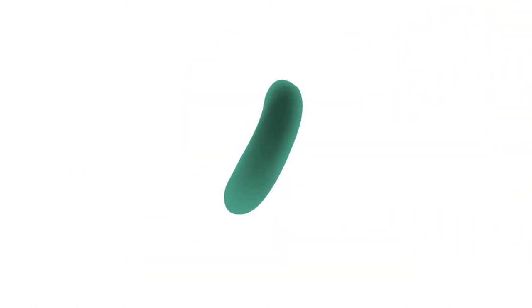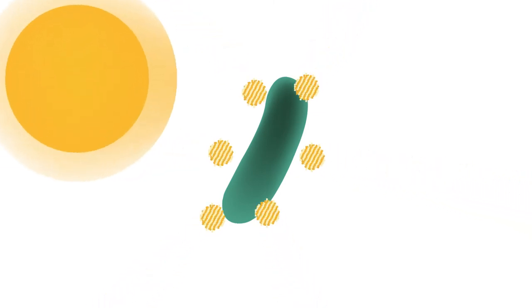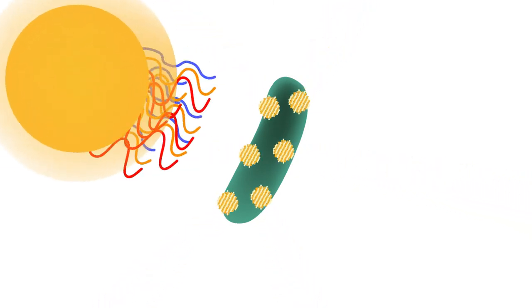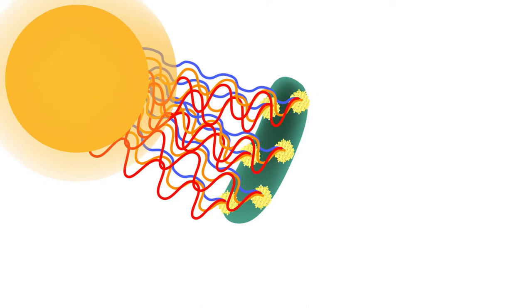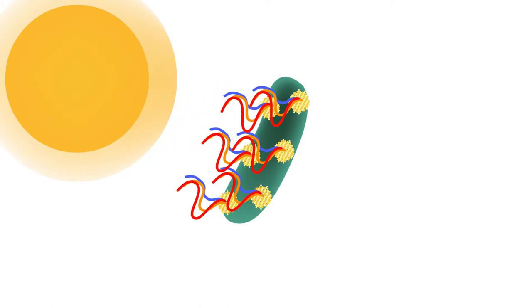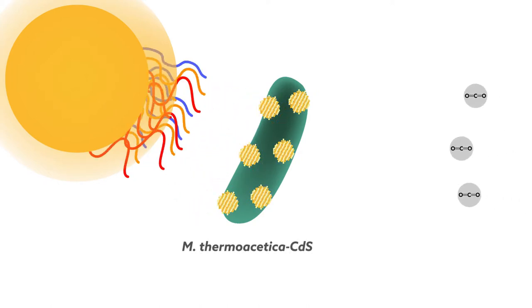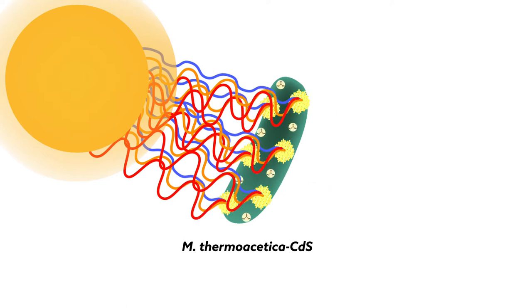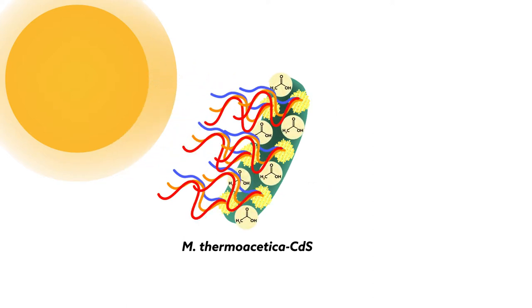When Sakamoto fed cadmium and the amino acid cysteine to the bacteria, they synthesized cadmium sulfide nanoparticles, which function as solar panels, on their surfaces. The hybrid organism, M. thermoacetica-CdS, produces acetic acid from CO2, water, and light.